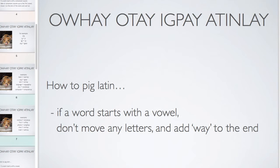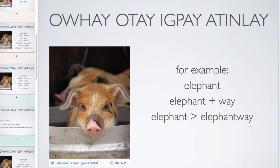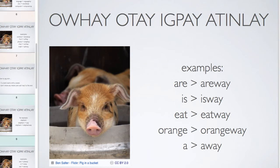If a word starts with a vowel, we still do something, but we don't move any letters — we just add 'way' to the end of it. So Elephant would become 'Elephant-way'. There's no actual transposition going on. Other examples: 'Are' would become 'Are-way', 'Is' becomes 'Is-way', 'Eat' becomes 'Eat-way', 'Orange-way'. And 'A' — another example of a Pig Latin word becoming a different English word — 'A' would become 'Away'.